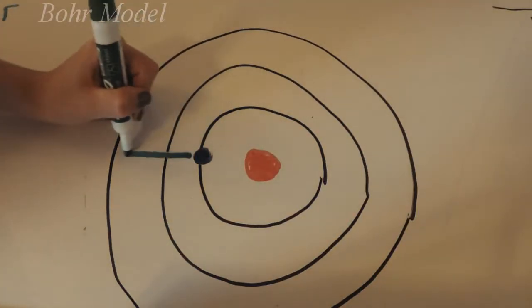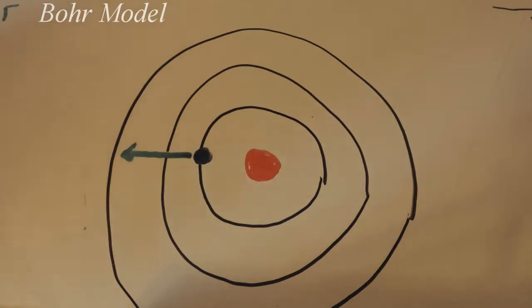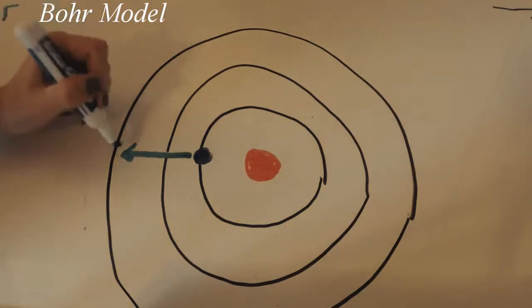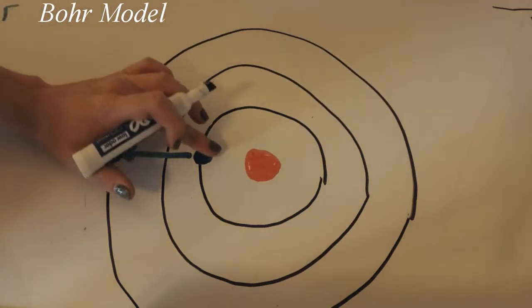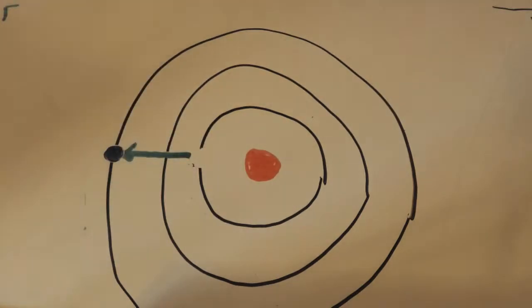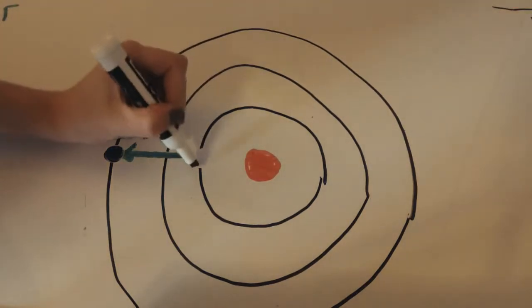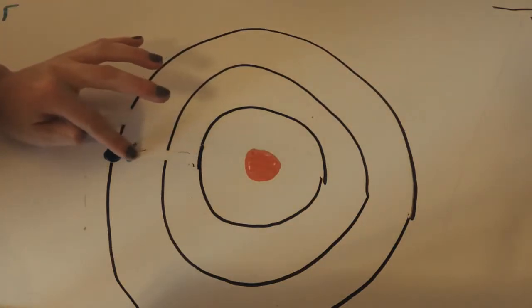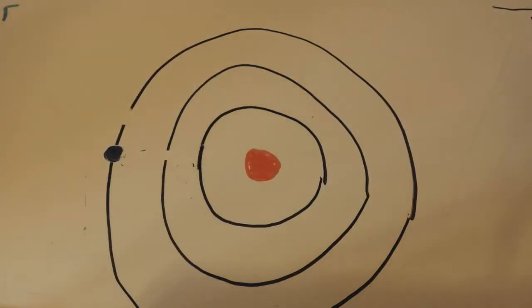This can be further explained using the Bohr model. After the particle absorbs energy, usually in the form of light, an electron moves to a higher energy level away from the nucleus. When the electron comes back down, it releases energy in the form of a photon, which is the fundamental particle of light.